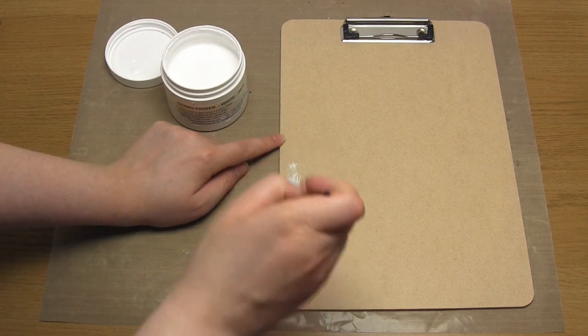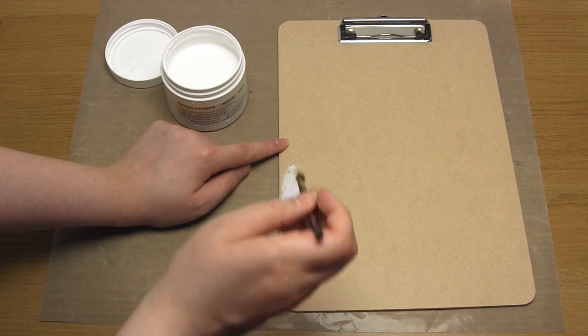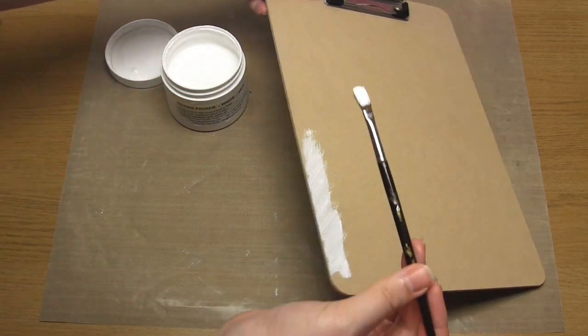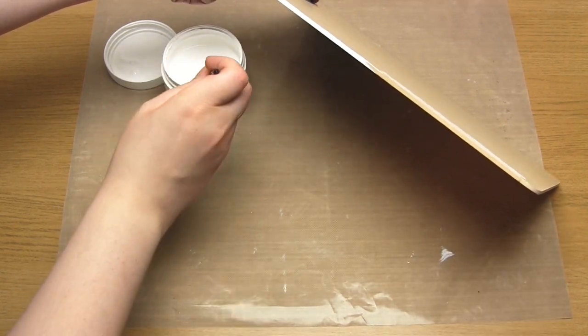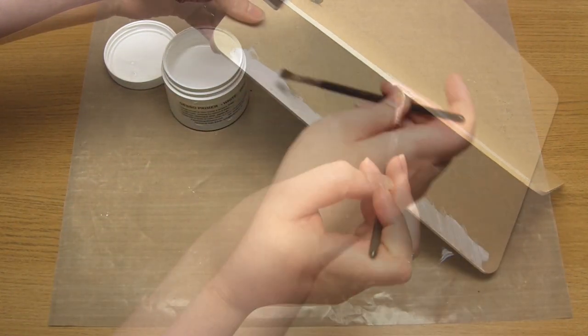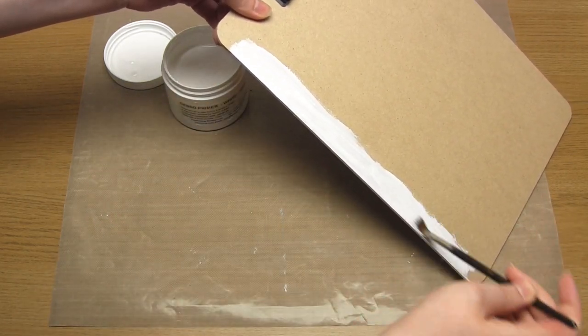Right, so the first step is to decorate your clipboard, and of course this step is optional. I just painted white gesso along the edge and also around the border on the front and the back. Basically, I was just covering any areas that weren't going to be covered with something else later on.